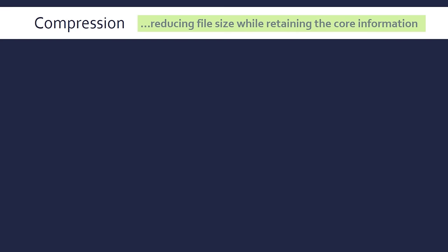Let's look at compression. Compression is all about reducing file size while retaining the core information that is crucial to the file. We don't want to get rid of any crucial information. This means fewer bits are needed to represent the same information.